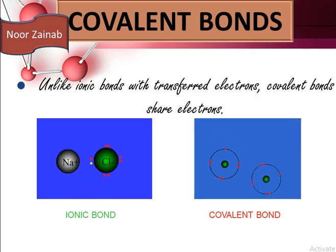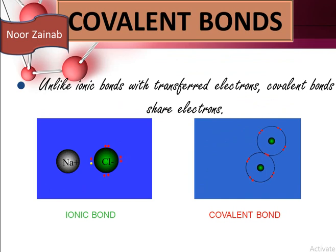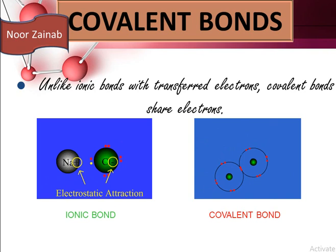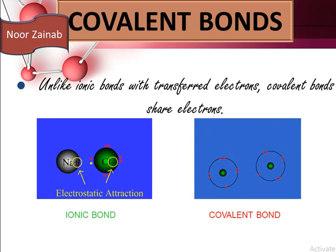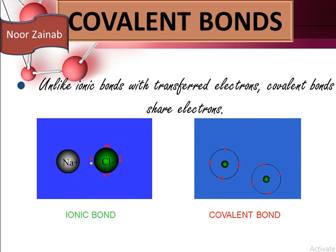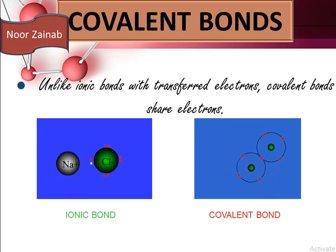In covalent bonding, it involves the sharing of electrons between two atoms. The atoms share electrons and both complete their octet.